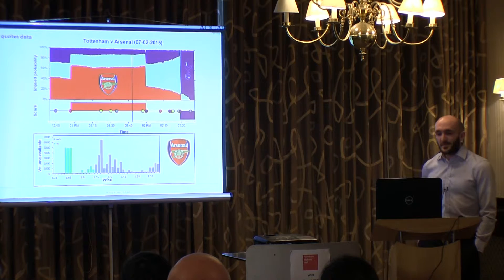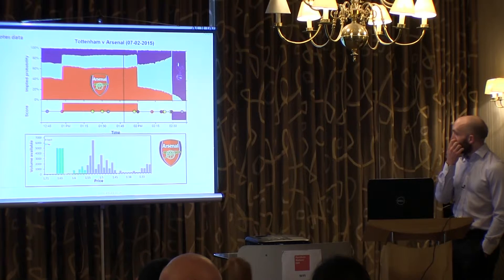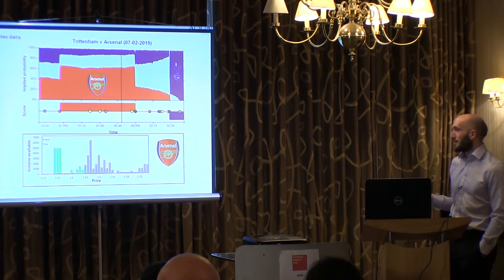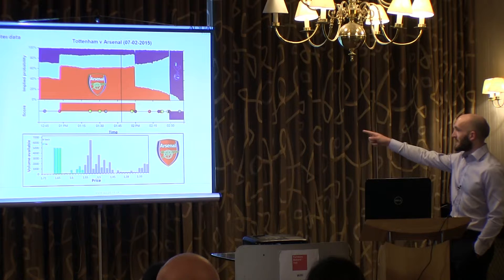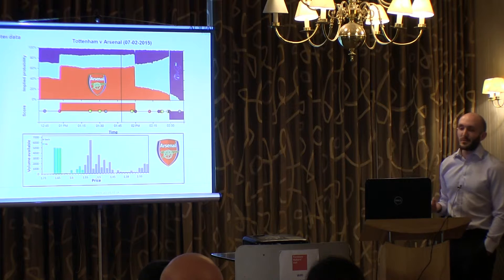This is a Tottenham Marshall game from about three months ago. From odds data we can get the mid, and from mid you can get implied probability. We can see live throughout the game — the left-hand side of the graph is just before kick-off, the right-hand side is just after full time. You can see in the middle it goes flat for half time, and there are pretty big jumps for all the goals.